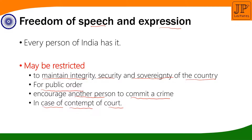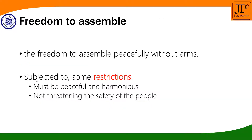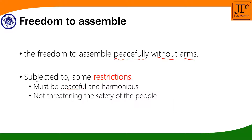The next is the freedom to assemble. The state guarantees every person the freedom to assemble peacefully without arms — remember that: peacefully without arms. Arms means weapons. Reasonable restrictions can be imposed in the interest of sovereignty and integrity of the country and the public order. This statement applies each and everywhere. The assembly must be peaceful, harmonious, and not threatening the safety of people.